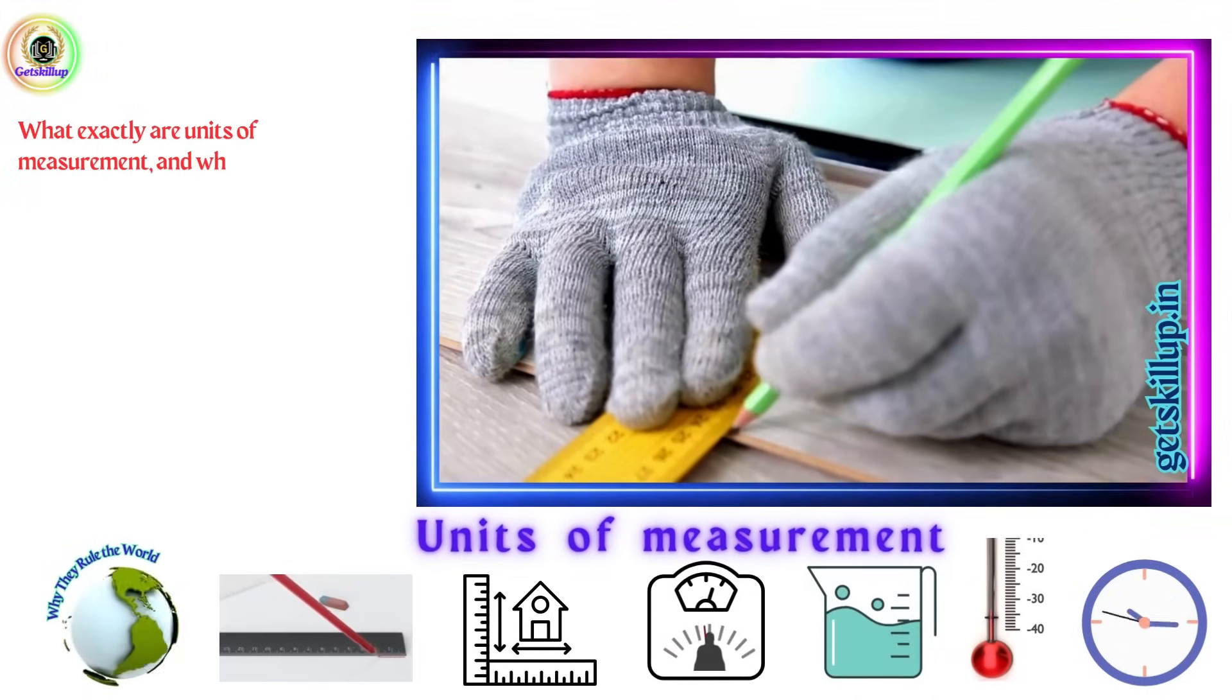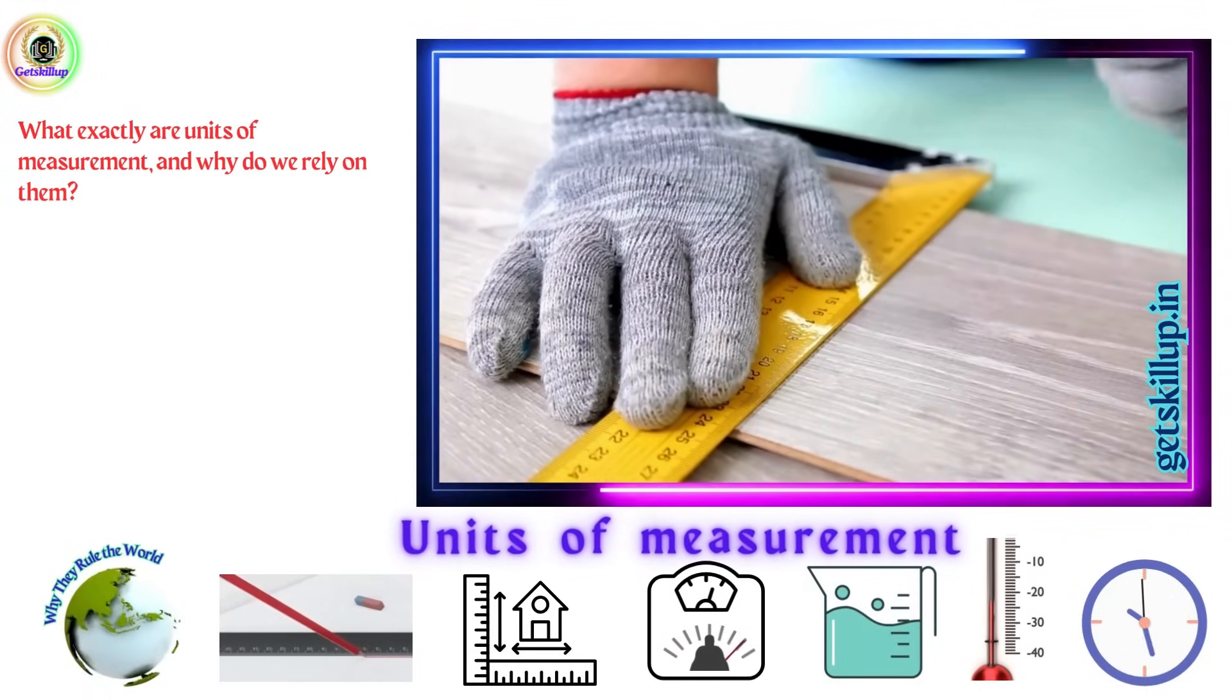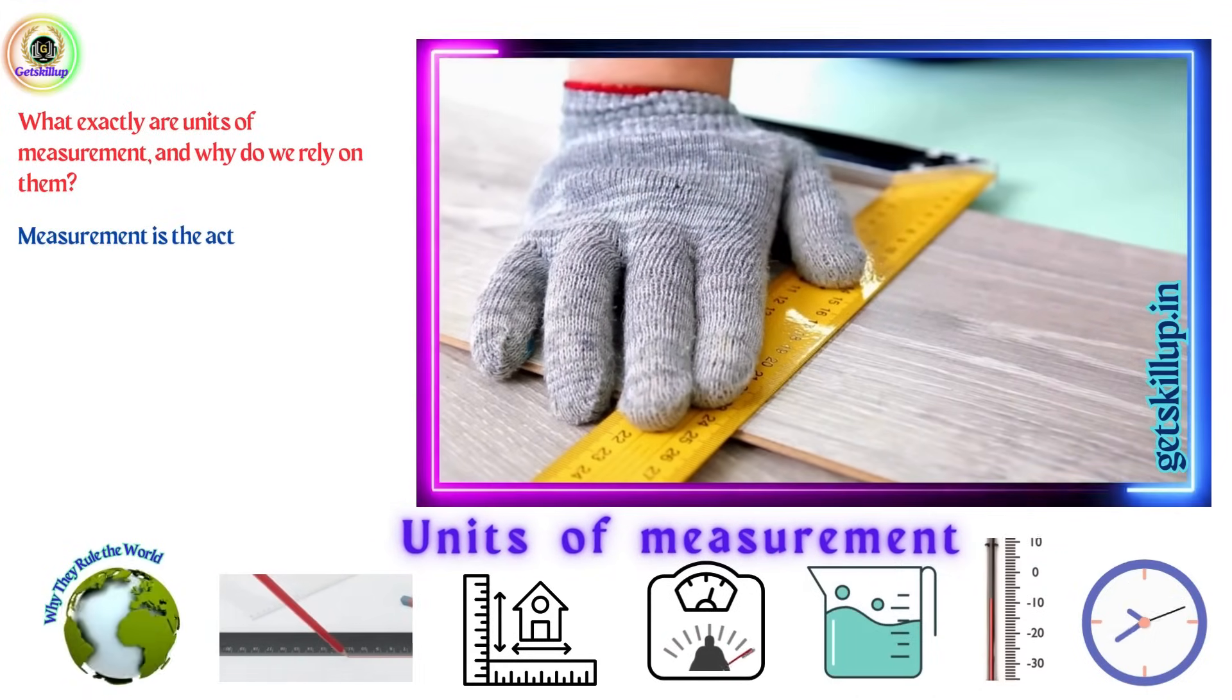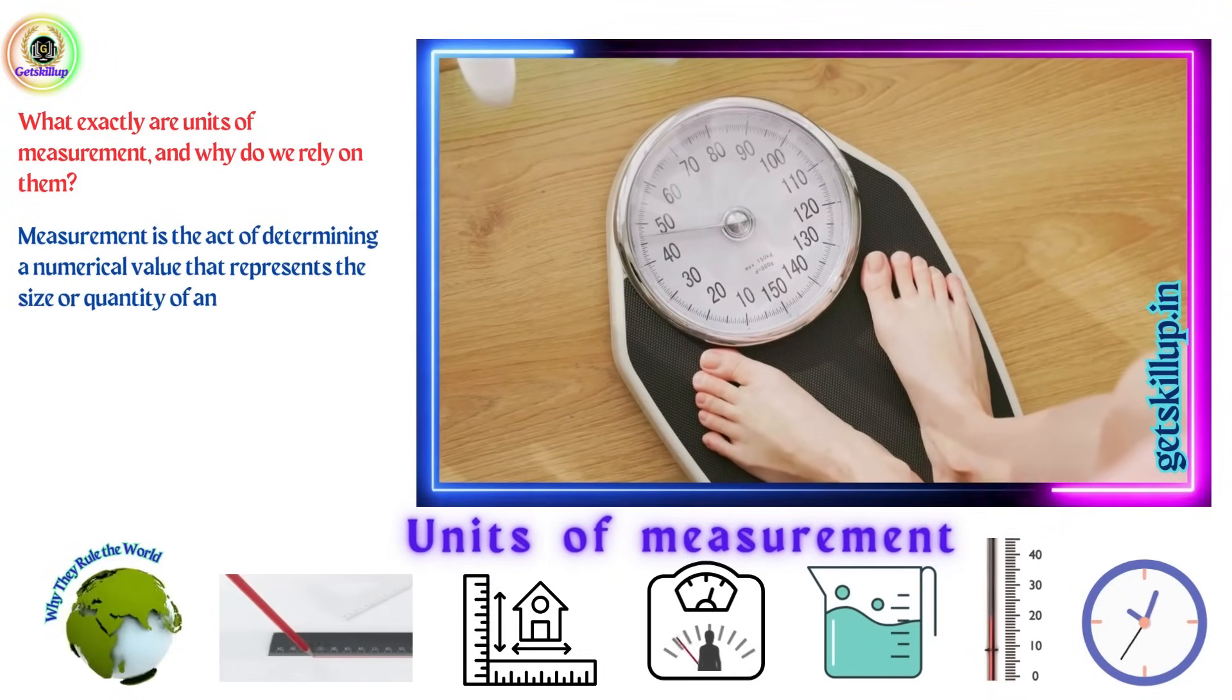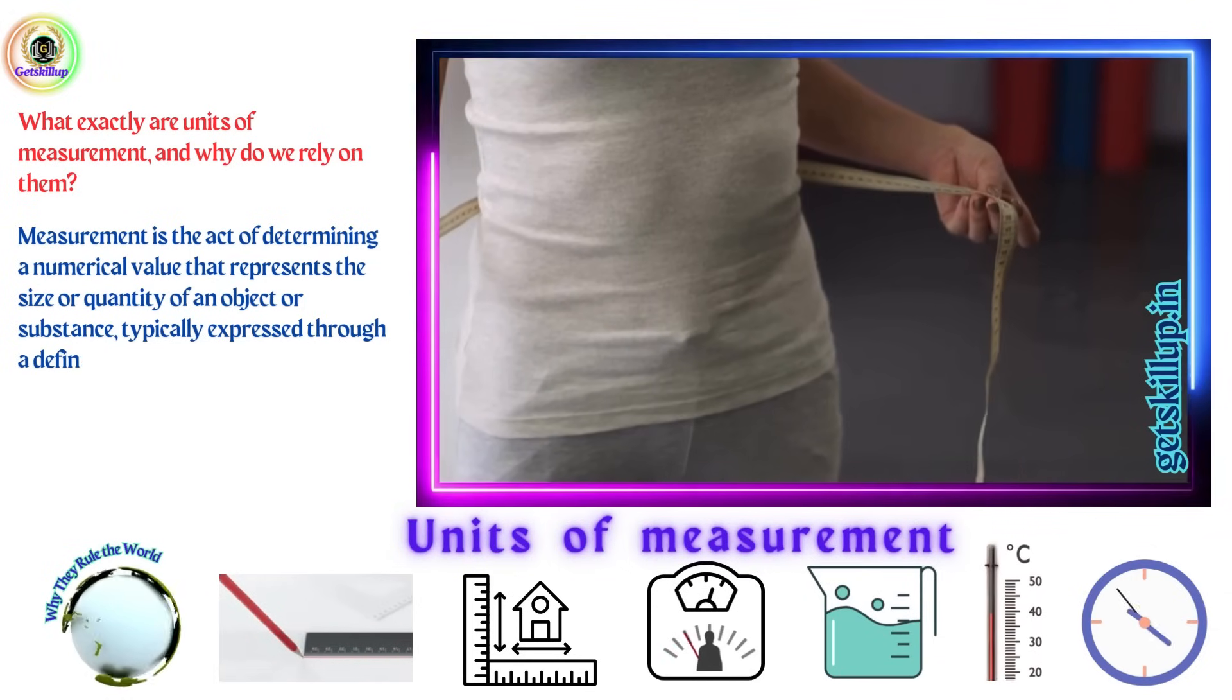What exactly are units of measurement and why do we rely on them? Measurement is the act of determining a numerical value that represents the size or quantity of an object or substance, typically expressed through a defined unit.